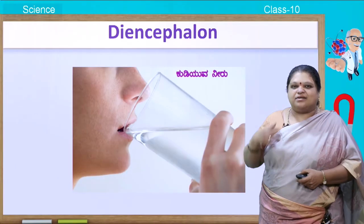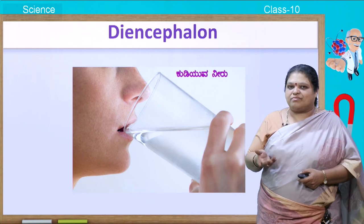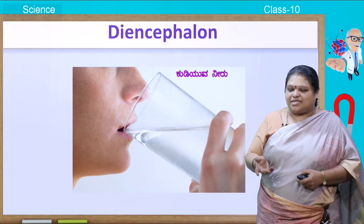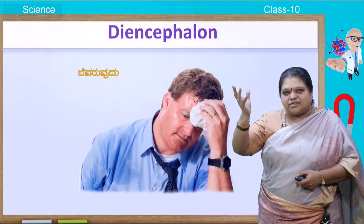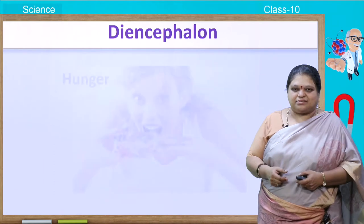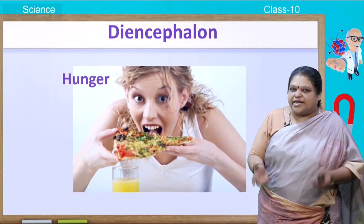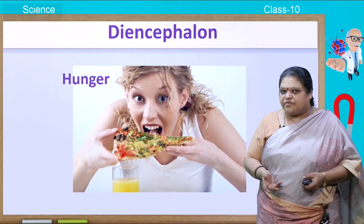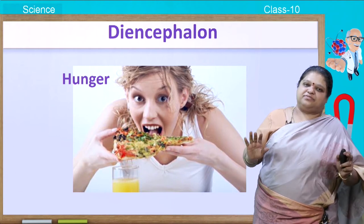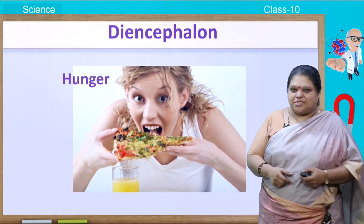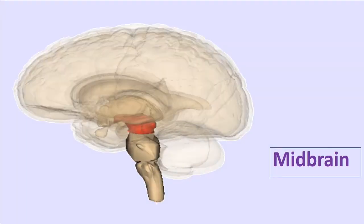The hypothalamus also controls the feeling of thirst, sweating, and hunger. For example, whether you eat two idlis or four idlis, your appetite will signal when you have had enough — that is also controlled by the hypothalamus. So the hypothalamus controls many important functions.